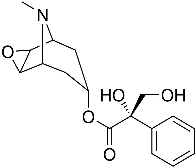Anisodine, also known as datoramine and alpha-hydroxyscopalamine, is an antispasmodic and anticholinergic drug used in the treatment of acute circulatory shock in China. It is a tropane alkaloid and is found naturally in species of the solanaceae family of plants. Anisodine acts as a muscarinic acetylcholine receptor antagonist and alpha-1-adrenergic receptor agonist.